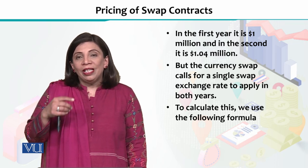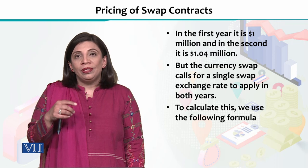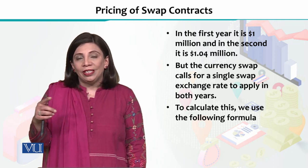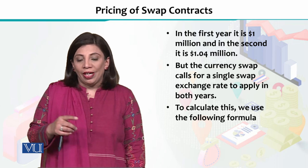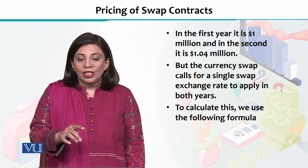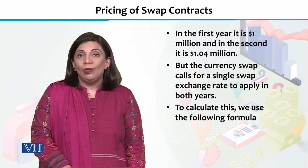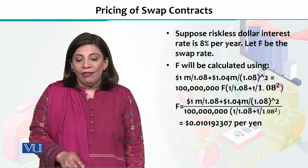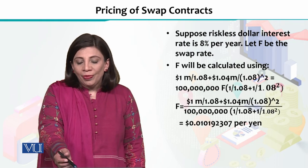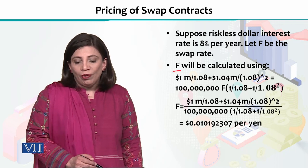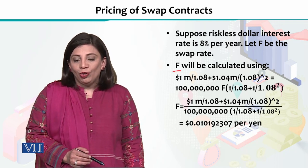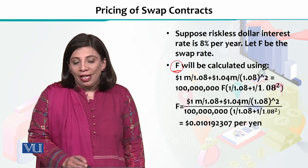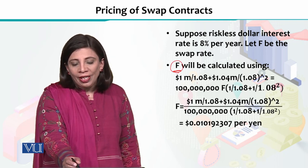Now, when we talk about a currency swap, we put a single swap exchange rate — we do not put multiple exchange rates, because we are signing a swap contract. So what do we need to do? We need to look at the formula used to find out the price of the swap contract. The swap rate is represented by capital F.